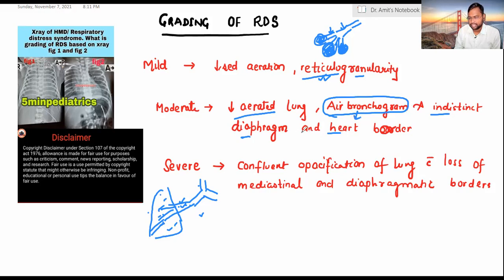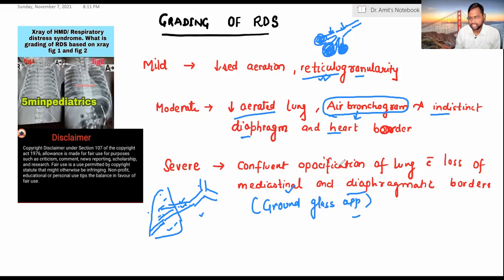There is indistinct heart and diaphragm border. In severe form, we have confluent opacification of the lung with loss of mediastinal and diaphragmatic borders, which we call ground glass appearance.